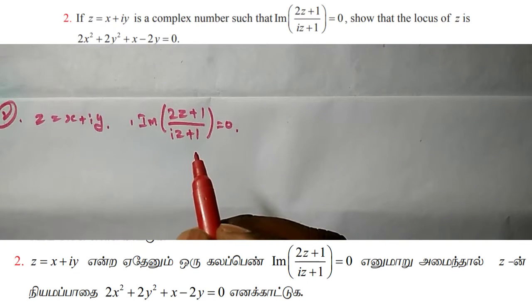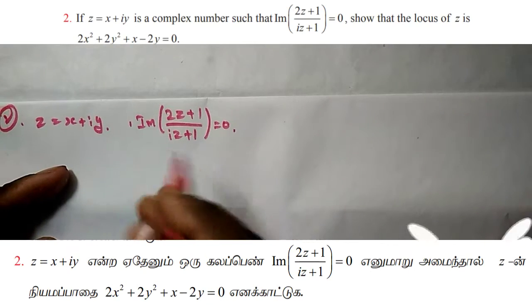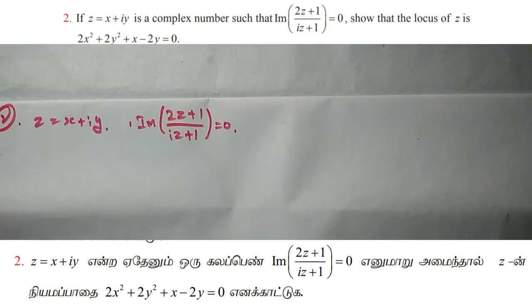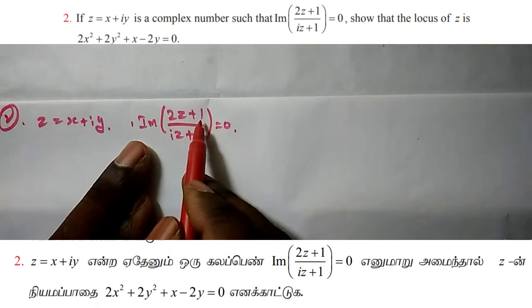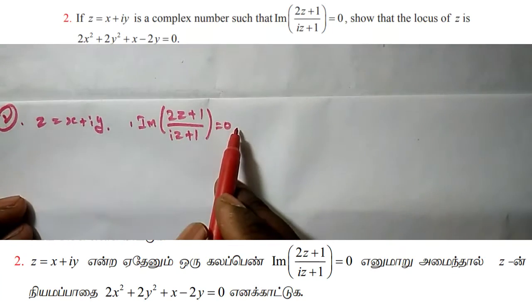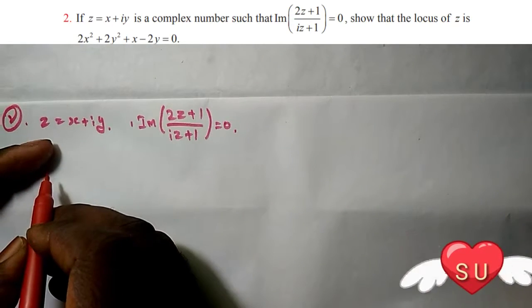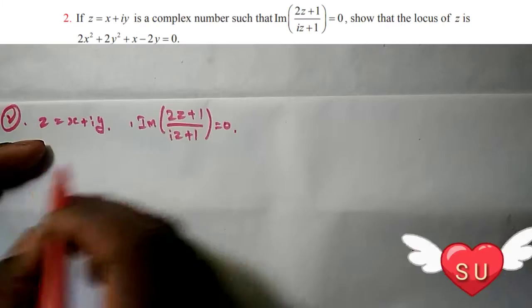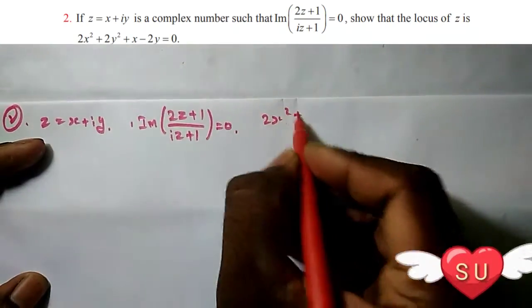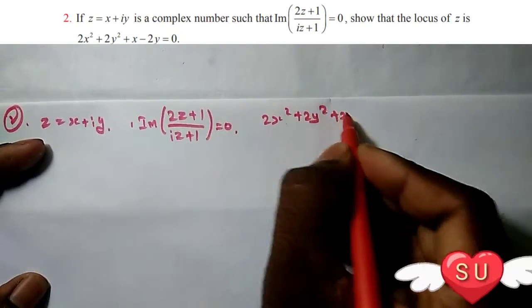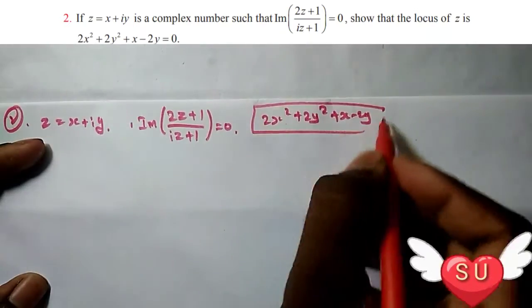Show that the locus of z is 2x² + 2y² + x - 2y = 0. Let's verify this. So we have: z = x + iy, imaginary of (2z+1)/(iz+1) = 0, and we need to show the locus is 2x² + 2y² + x - 2y = 0.